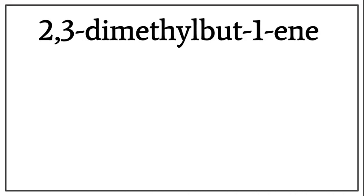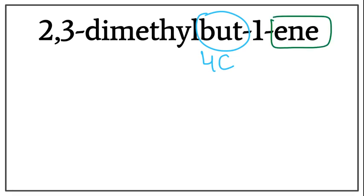Let's draw the structure for 2,3-dimethyl-but-1-ene, or 2,3-dimethyl-butene. But tells us that there are four carbons present in the longest carbon chain. Ene tells us that this is an alkene, meaning that there is a double bond present between the carbons.